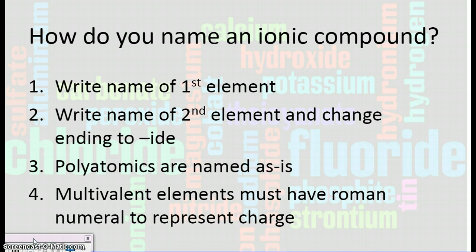You want to write the name of the first element. Then you're going to write the name of the second and change the ending to -ide. If it's a polyatomic, we're going to leave it as is because they have special names. And if it's a multivalent element, which means it's in the middle or the skip, we're going to use Roman numerals.